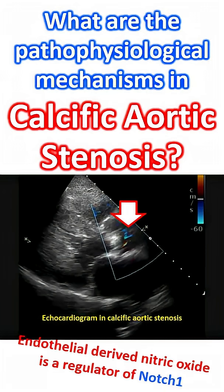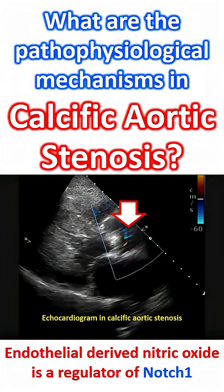Endothelial-derived nitric oxide is a regulator of Notch 1 signaling in aortic valve interstitial cells. That is how endothelial dysfunction triggers calcification of valvular interstitial cells.